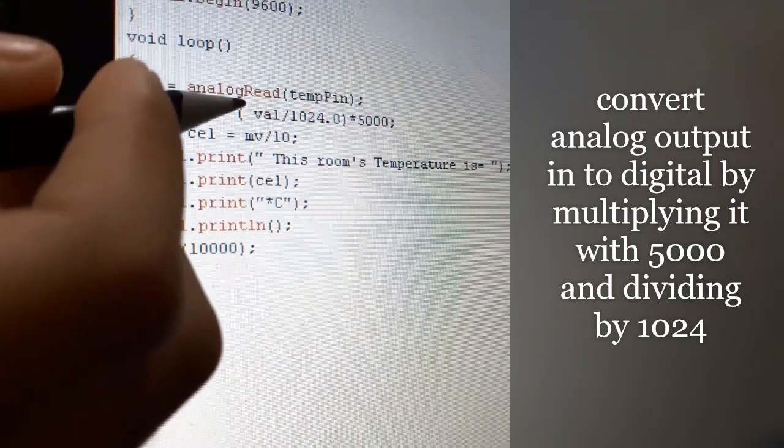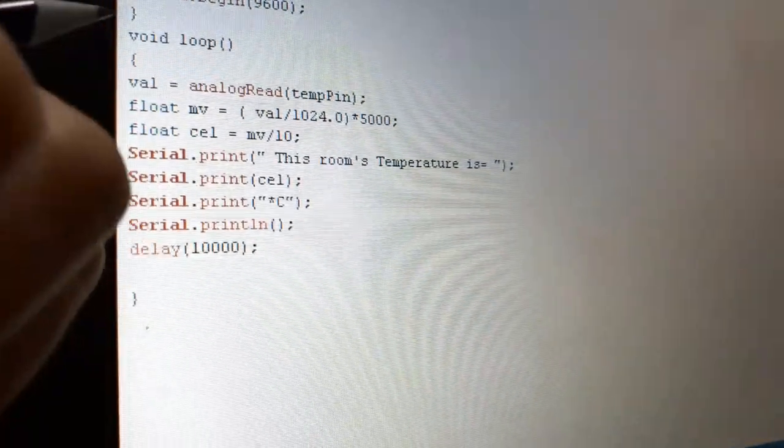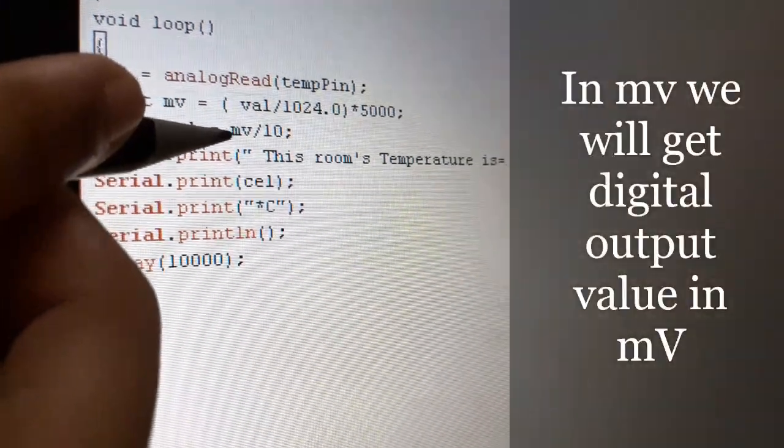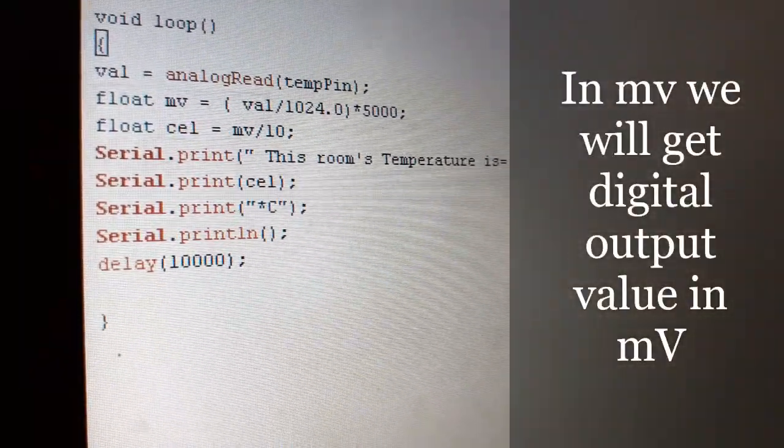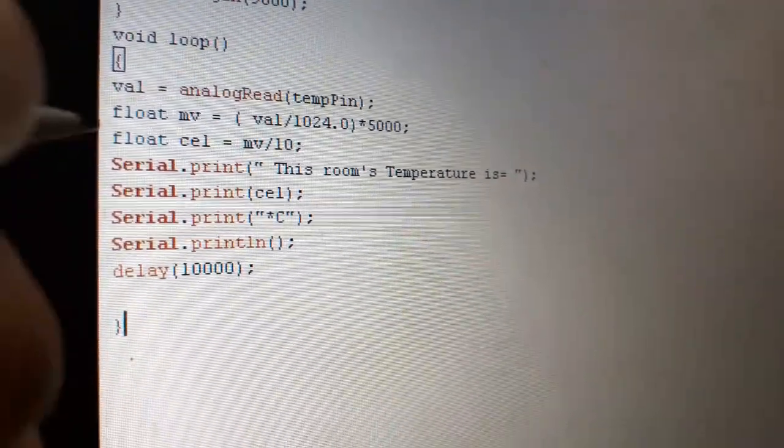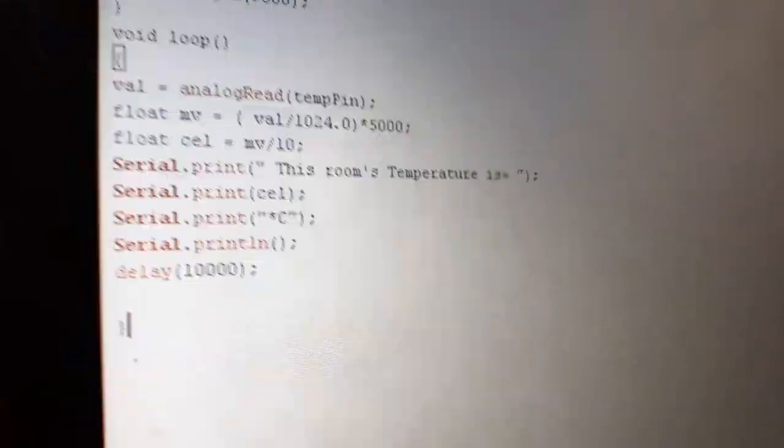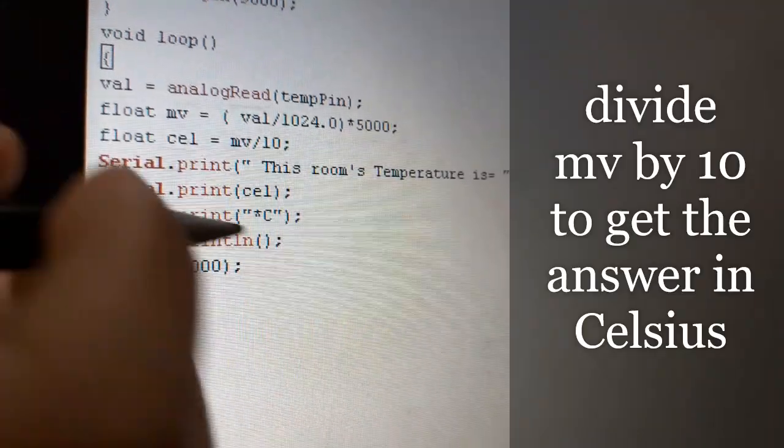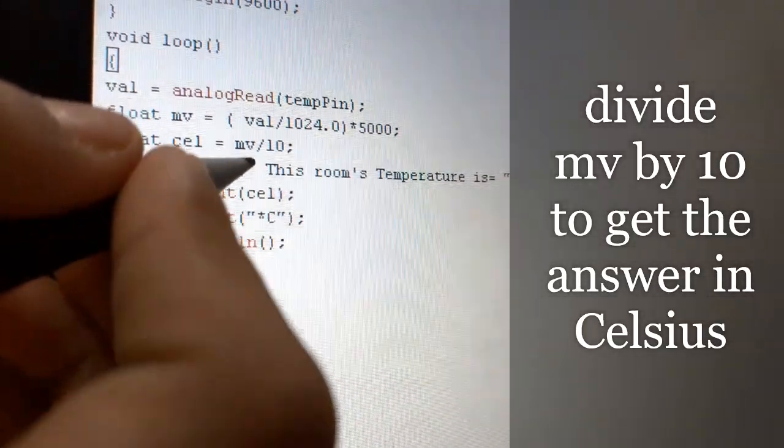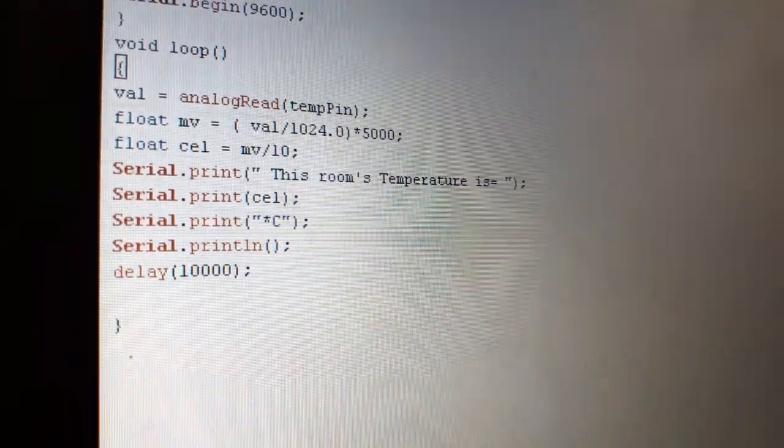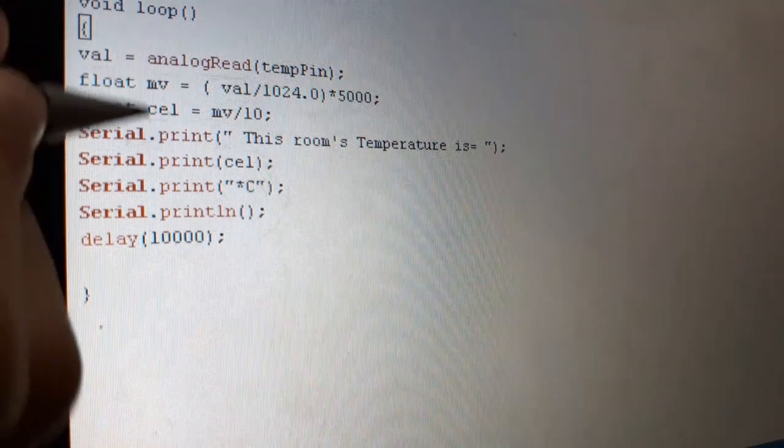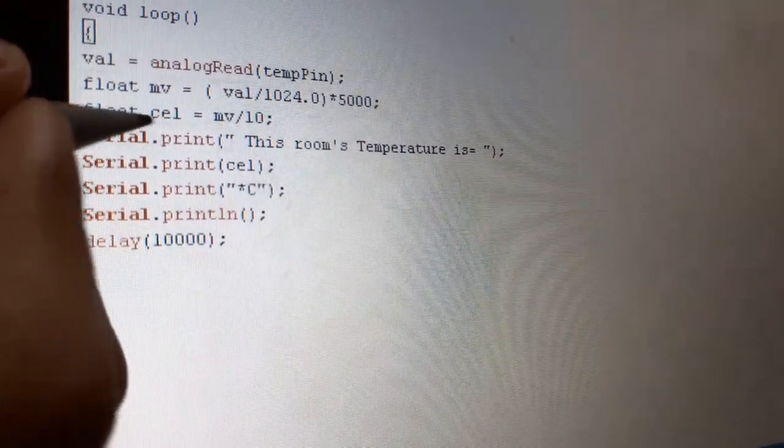This output will be in analog, which we have to convert to digital using this formula. Which I will explain later. In variable mv, we are getting the output in millivolts. That we need to convert to Celsius. As we know, the sensitivity of LM35 is 10. So, we need to divide mv by 10. Then, the final output in variable cel will be the room temperature in Celsius.